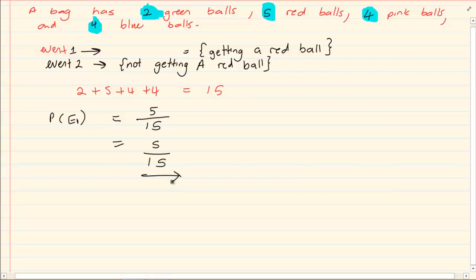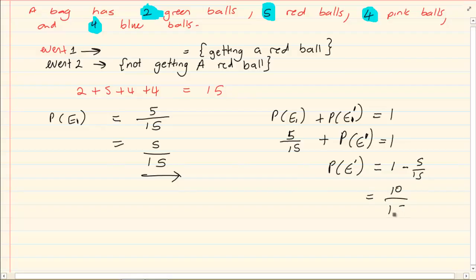What is the probability of not getting a red ball? So we know that the probability of getting a red ball plus the probability of not getting a red ball is going to equal to 1. If you already have the probability of E, then the probability of not getting a red ball would be 1 minus 5 over 15 which is equal to 10 over 15.